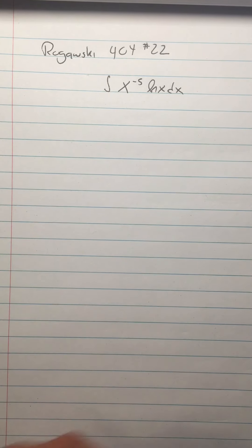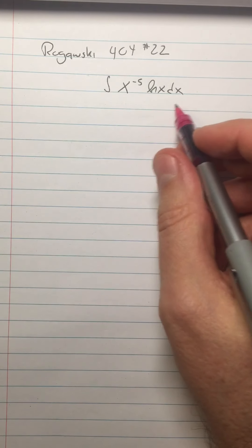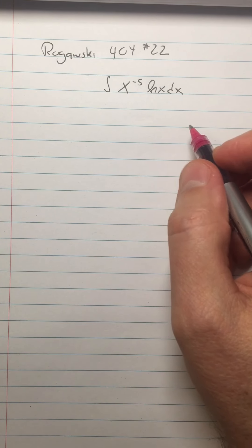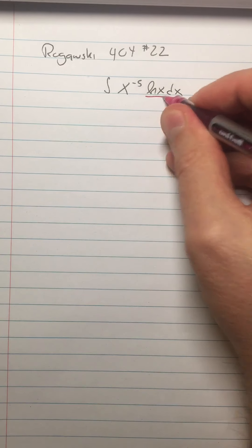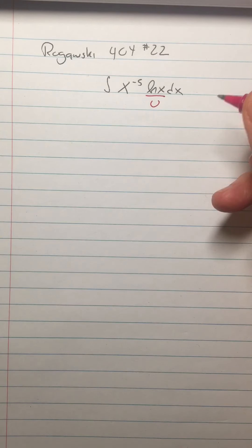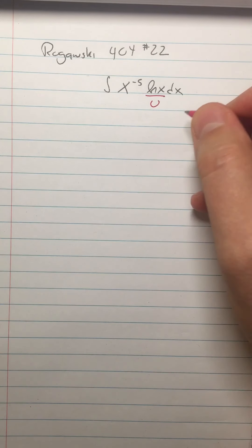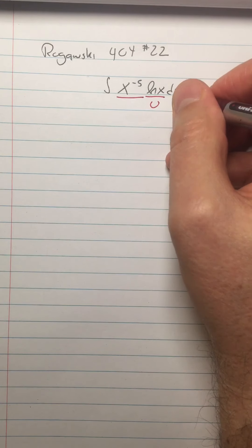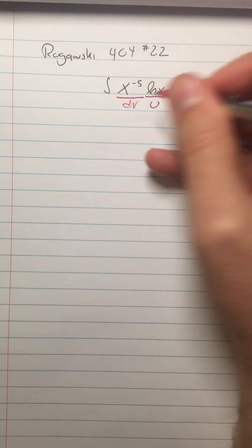We'll do some definite integrals next, but I just want to do a couple more of these. So the idea is u is a function that you want to differentiate. If you have ln x, that's pretty much going to be u because you don't know how to anti-differentiate ln of x, so you're going to want to differentiate it. That makes the x to the negative fifth with the dx is dv.